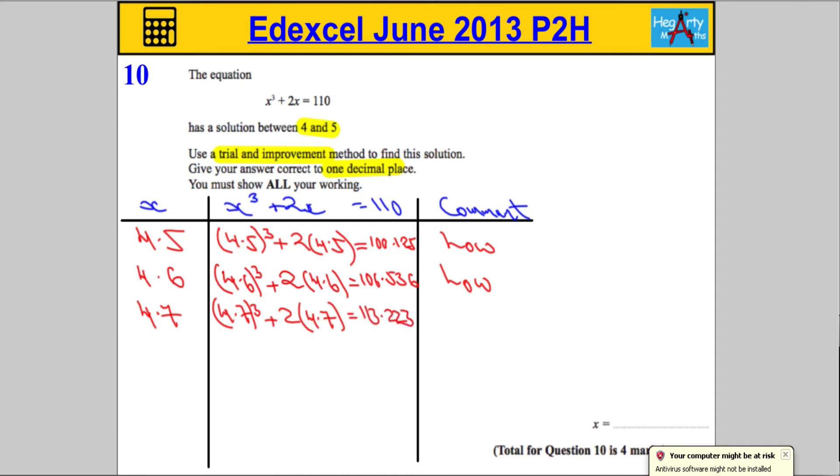So 113.223 gives us an answer. In comparison to 110, that is too high or too big. Just so I should say, small, that's too small. This one is going to give us an answer that's too high or too big.